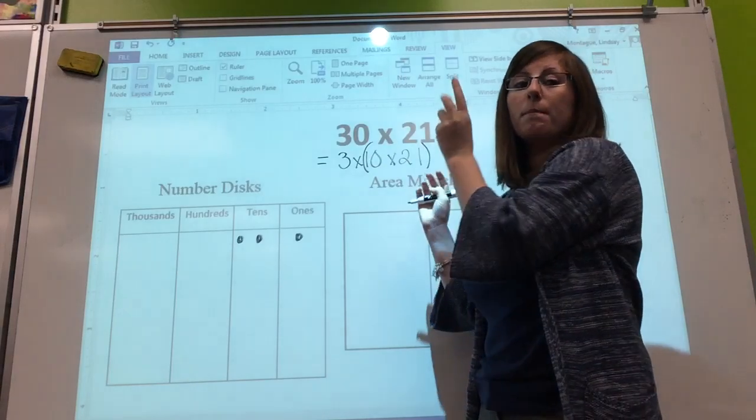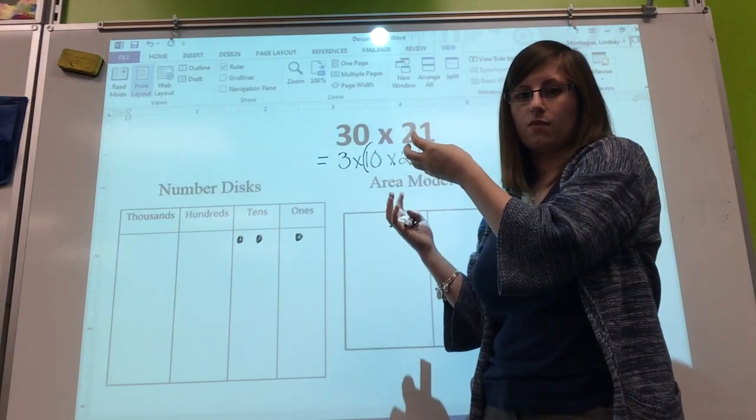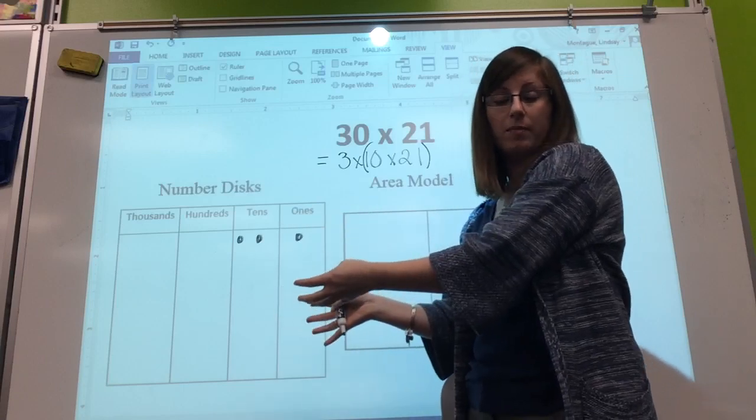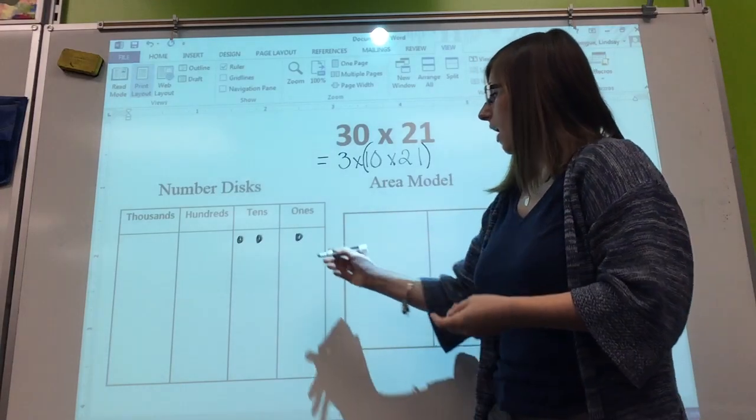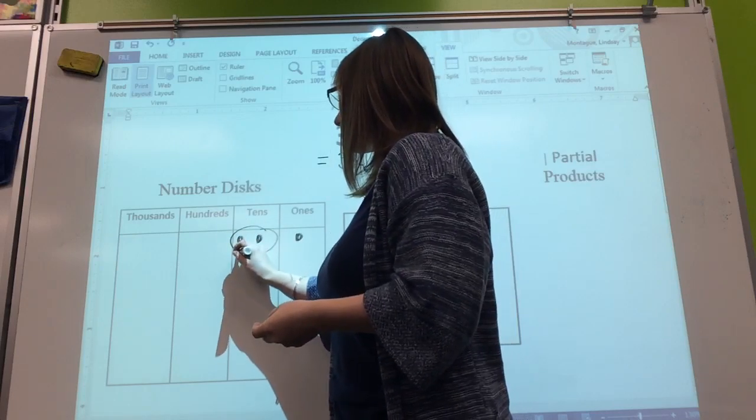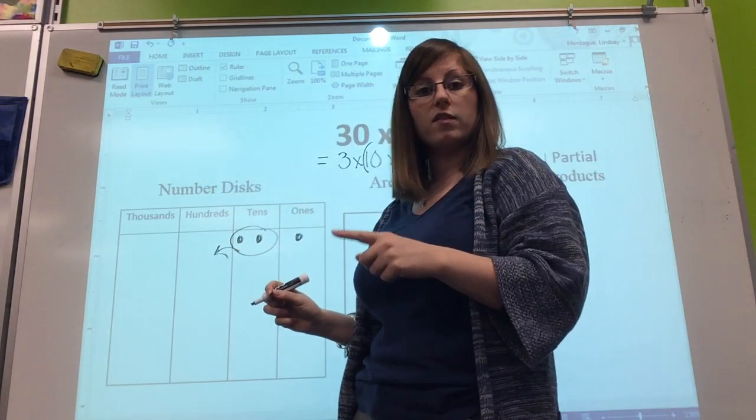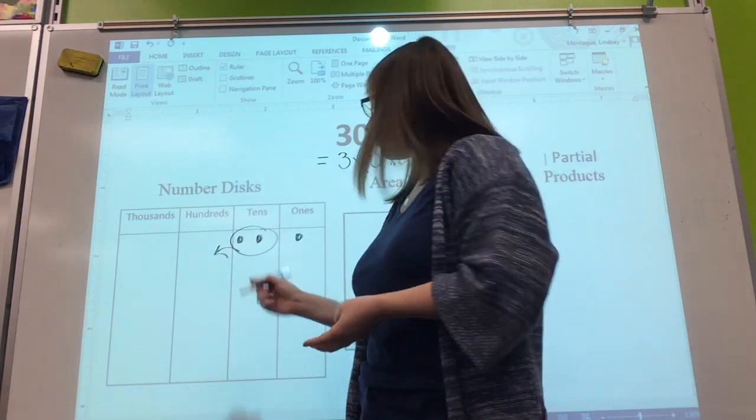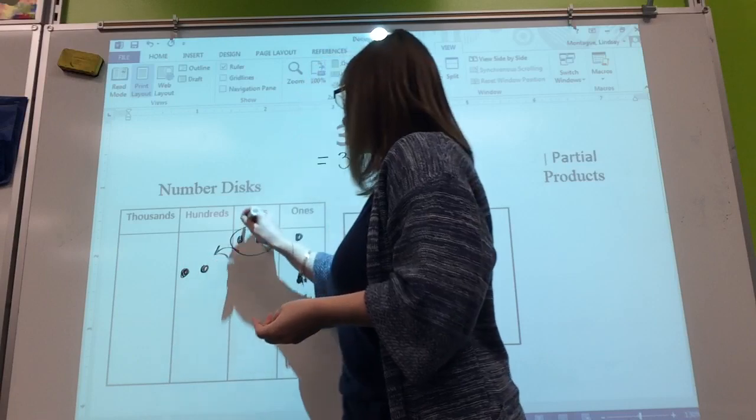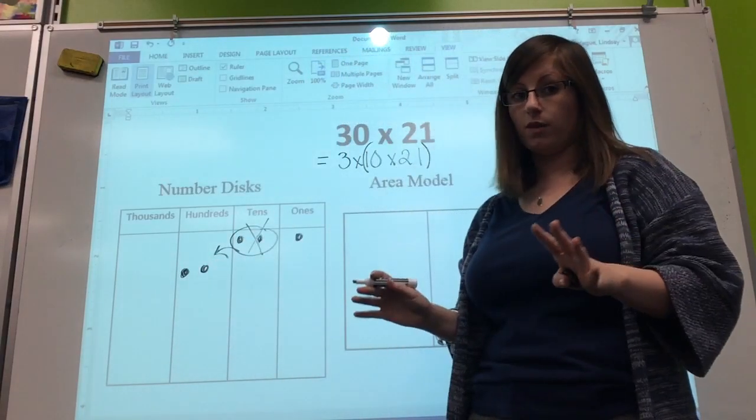But we want to know why that works, and that's because we are moving place values when we multiply by 10. We're going to circle the disks in the tens place and move them over to the hundreds place - it gets one place value bigger if you multiply by 10. I'm going to draw my 2 in the hundreds, cross them out in the tens because they're gone.